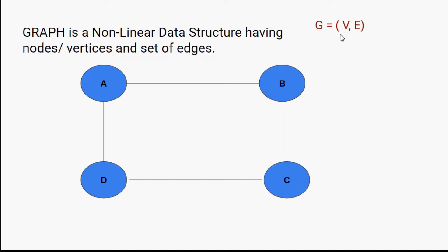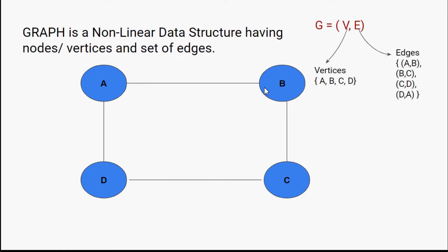A graph can be defined as a set of vertices V and a set of edges E. In this graph I have A, B, C, D as my vertices. E represents the set of edges — from A to B there is an edge, from B to C, from C to D, and from D to A. If there is a diagonal element from A to C, that will also be counted as an edge.